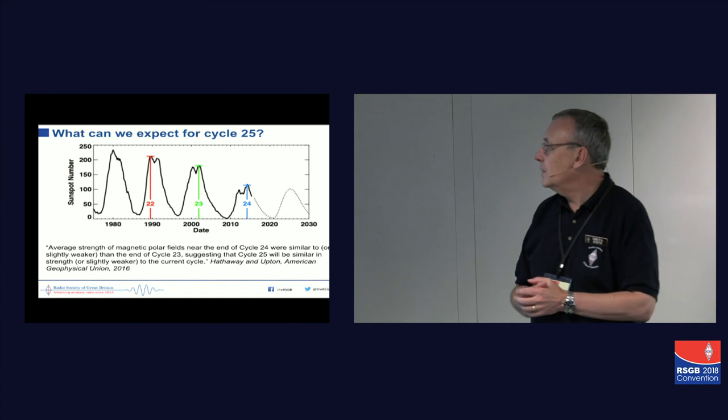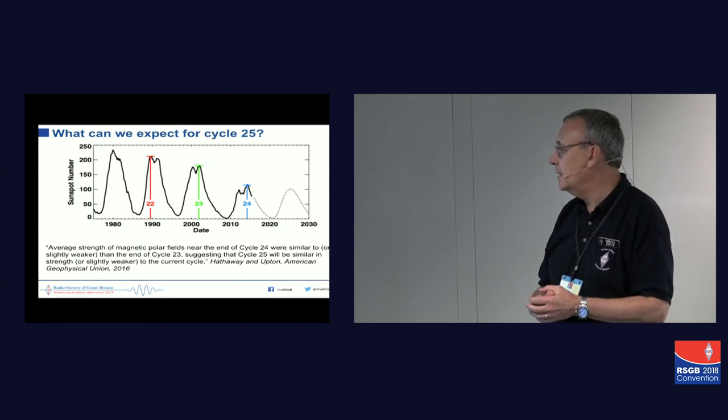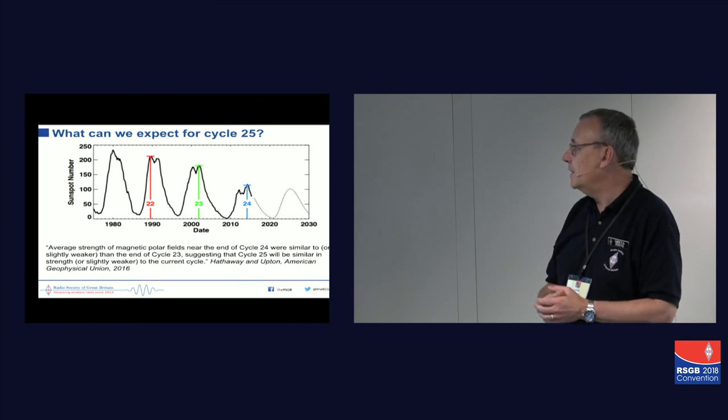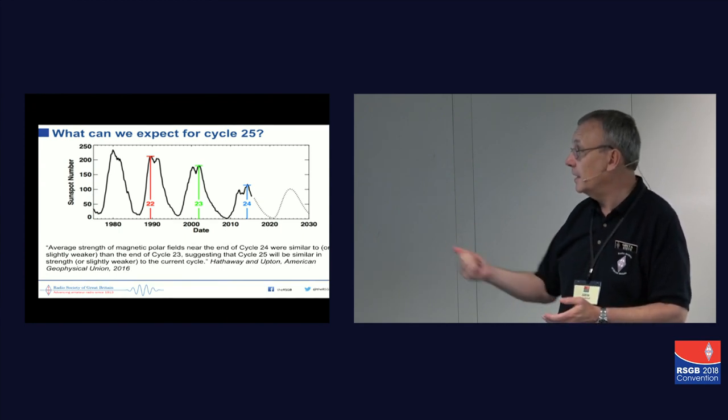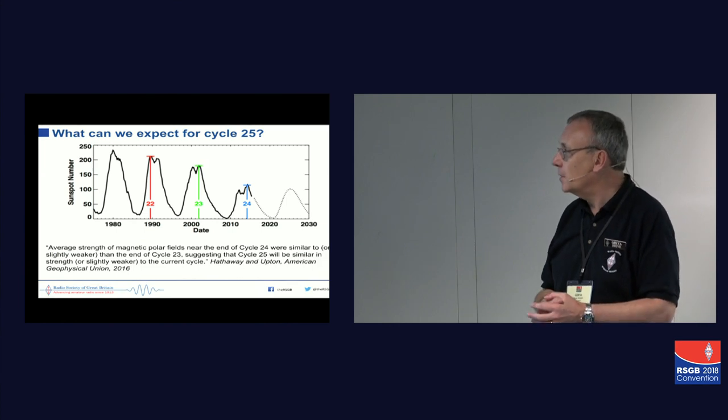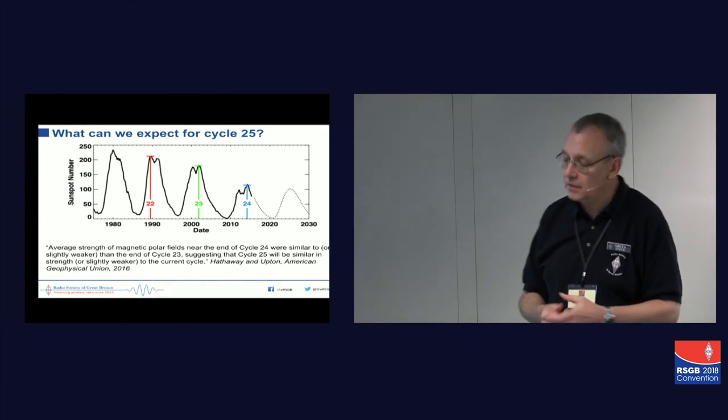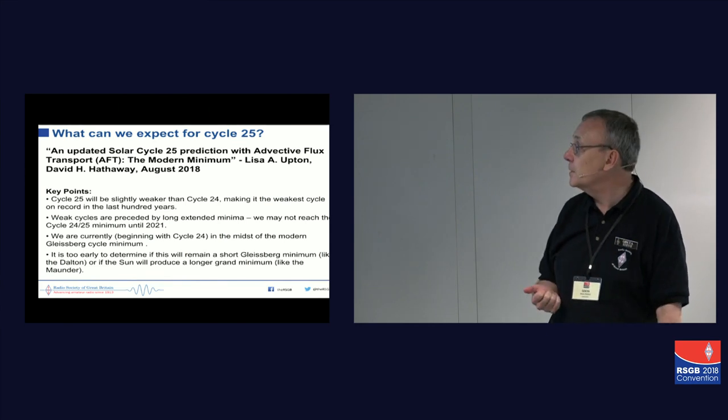This is a graph showing you solar cycle 22, 23, 24, and some suggestions for what we might get for the next cycle. And back in 2016, Hathaway and Upton wrote a paper where they said that the average strength of magnetic polar fields near the end of cycle 24 have been similar to the slightly weaker than the end of cycle 23, suggesting that cycle 25 may be similar in strength or slightly weaker to the current cycle. So it wasn't the end of the world, but it's rather suggesting that cycle 25 could be possibly similar to the one we've just gone through.